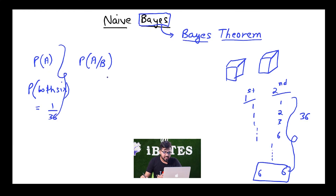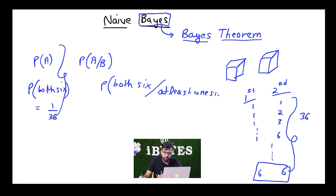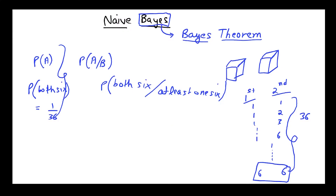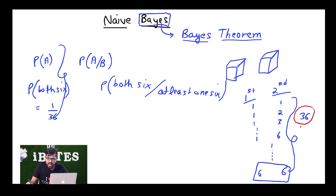But if someone asks me what is the probability that both are going to be 6, given that at least one of them is 6 — this is a conditional probability question. So out of these 36 outcomes, I have to find out in how many outcomes there is at least one 6. If I carefully count, I will find that there are 11 such outcomes.